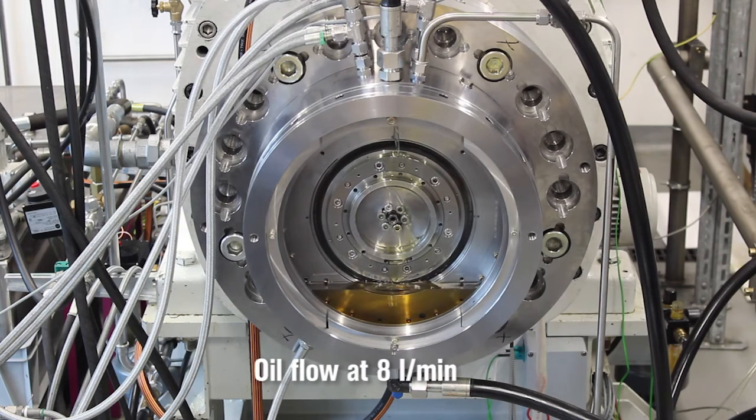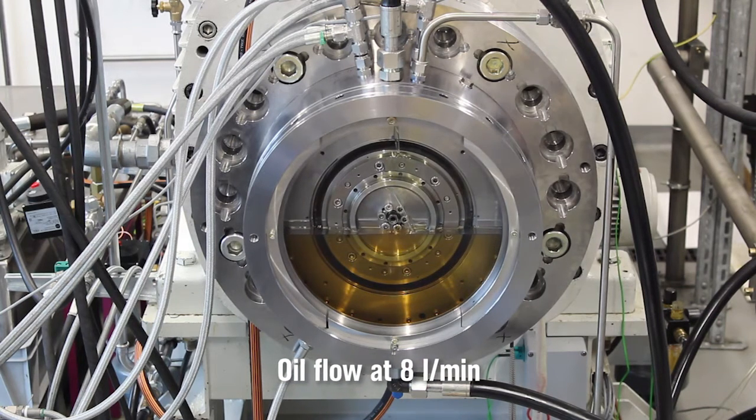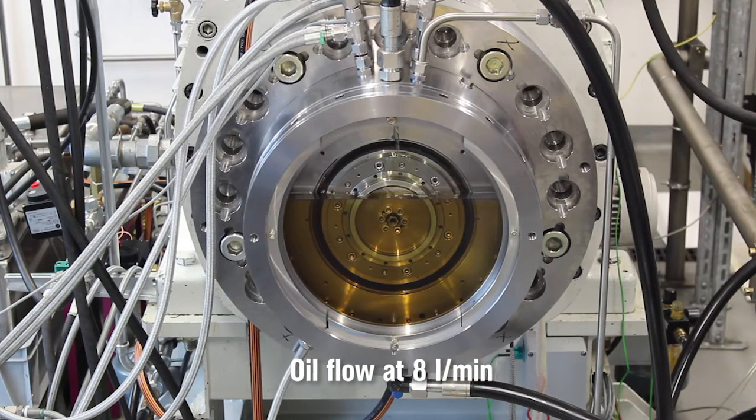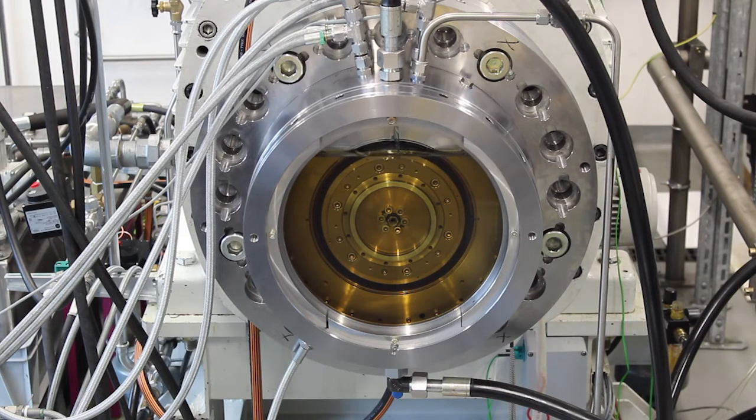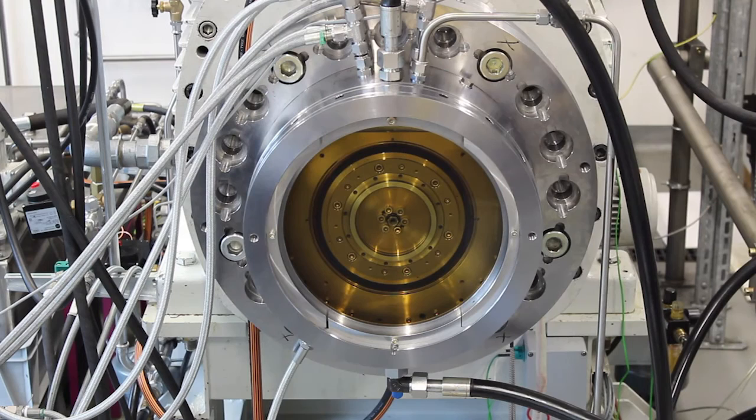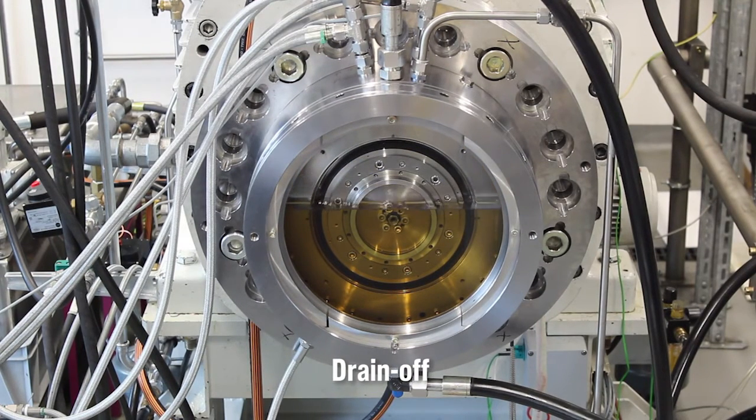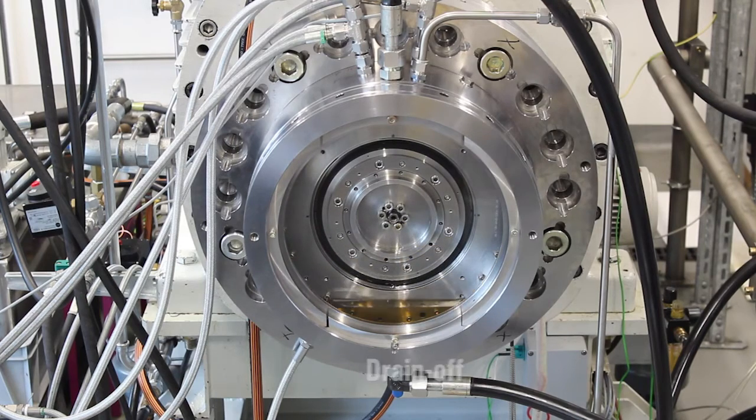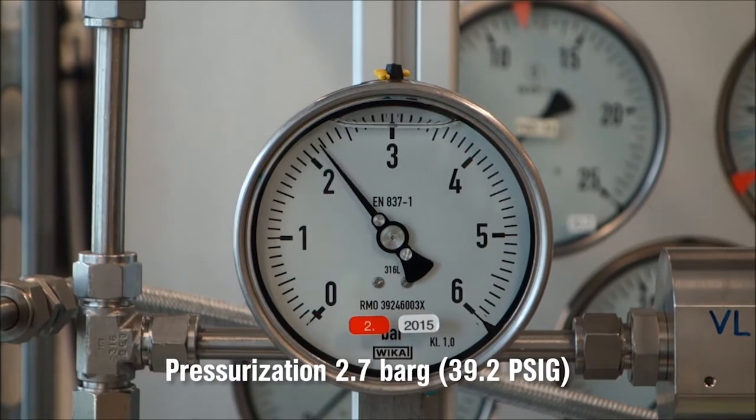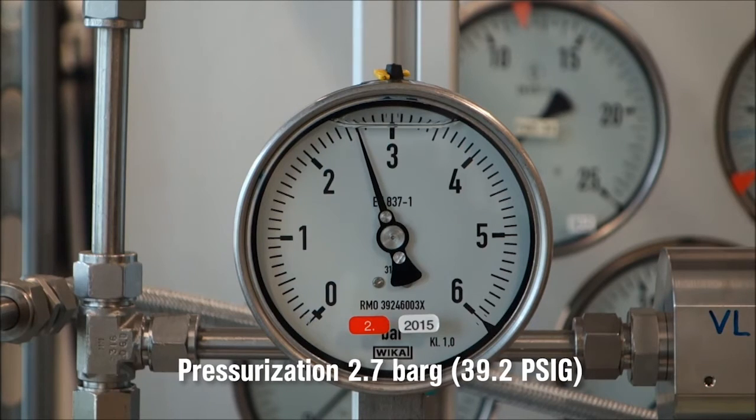Oil is again supplied to the bearing housing at a rate of 8 liters per minute. The difference being that, this time, the housing is completely filled with oil. After five minutes, the oil is then drained off again, and the pressure is increased once more to 2.7 bar gauge.